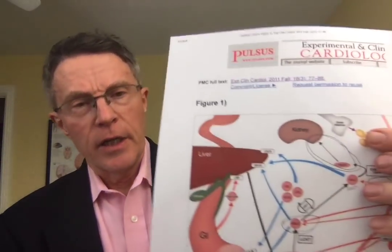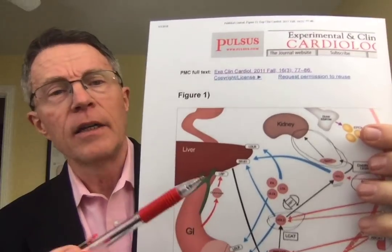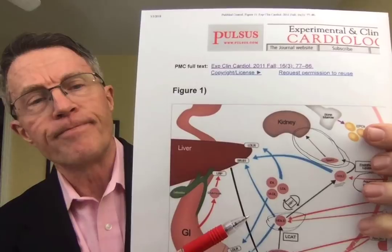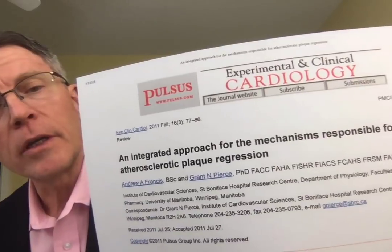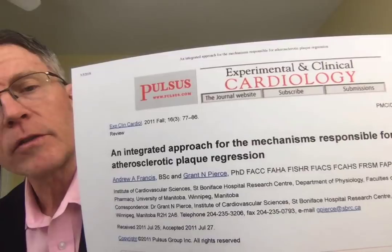There's a lot of interest in how to get rid of plaque in your artery walls. I didn't come up with this — this is stuff that's been around for a while. I'm going to cover an article that John brought up from 2011. The title of the article is 'Integrated Approach for the Mechanisms Responsible for Atherosclerotic Plaque Regression.' In other words, we've known about this and how it happens.